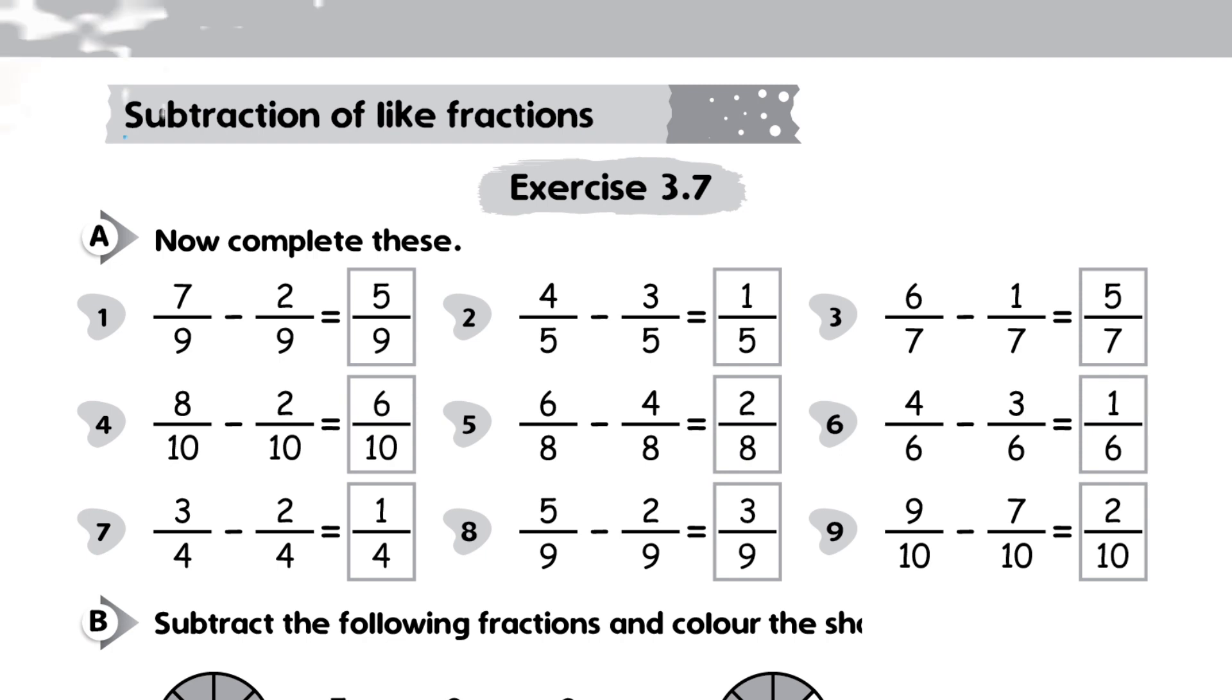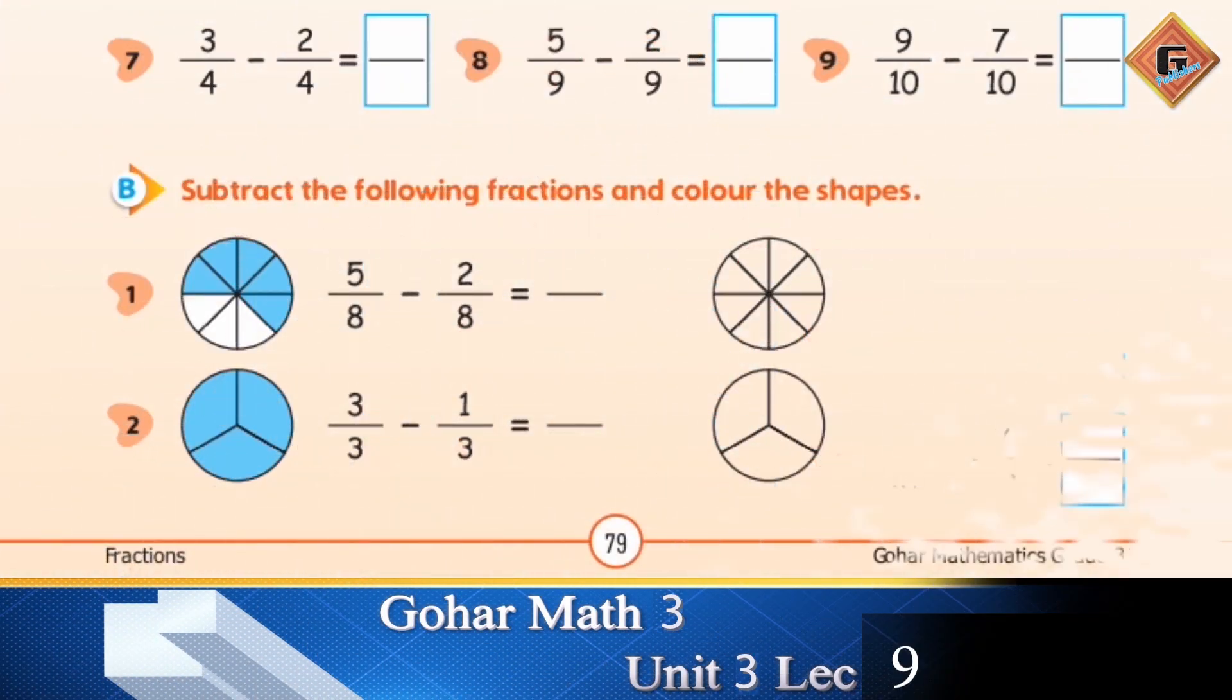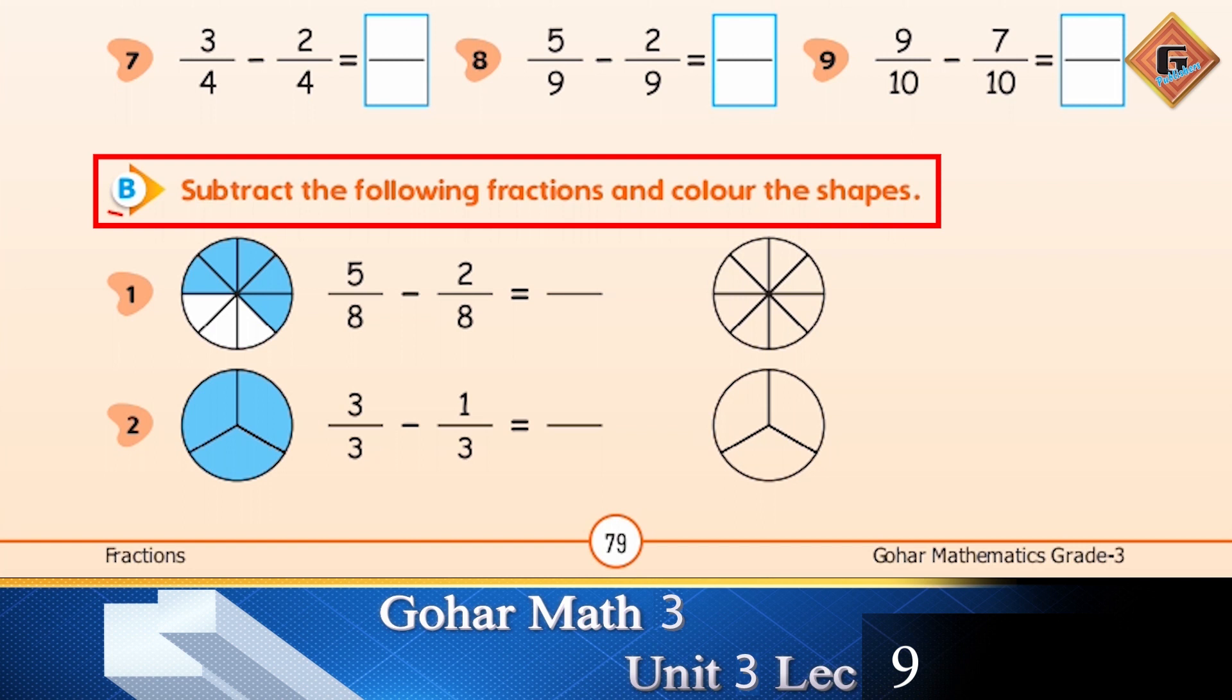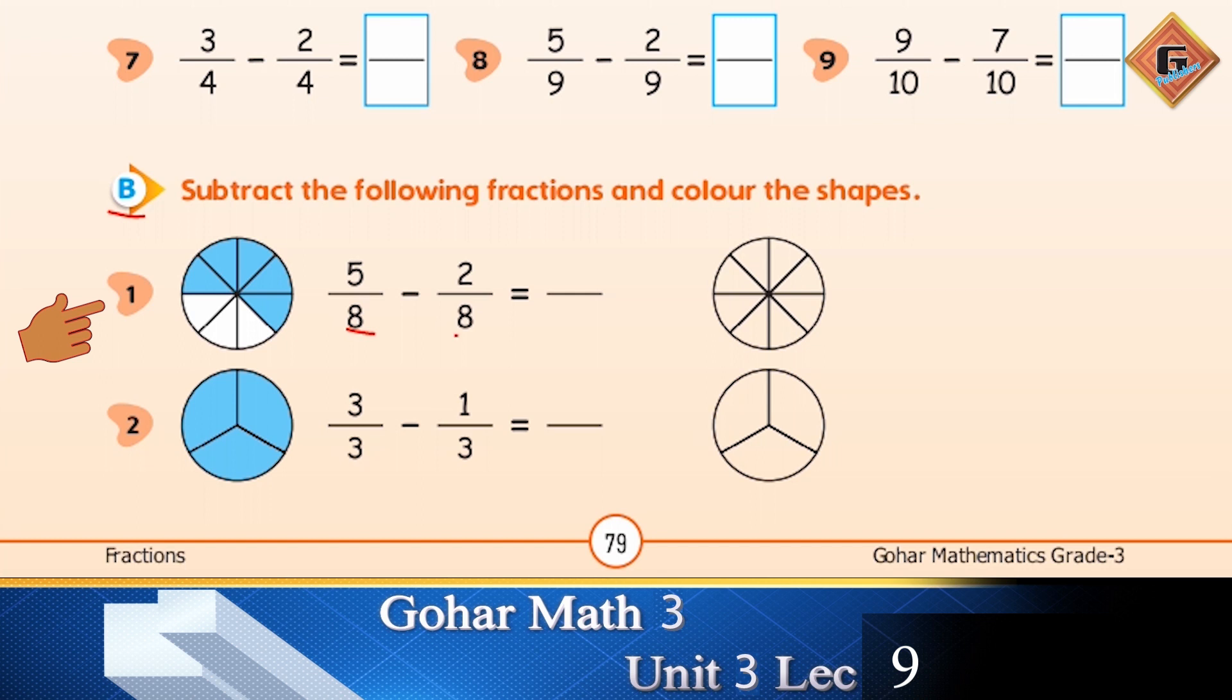Move to the B part: Subtract the following fractions and color the shapes. Aapne in fractions ko subtract karna hai aur phir color karna hai in shapes ko. The first one is 5 over 8 minus 2 over 8. Aapne denominator aapka same, and then you are going to subtract 5 and 2. 5 mein se 2 ko subtract karenge to kya aaega answer? Very good, it's 3.